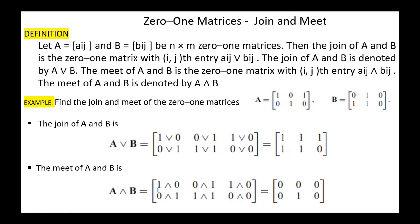The meet of matrices A and B is computed entry-wise using AND: 1 AND 0, 0 AND 1, 1 AND 0, 0 AND 1, 1 AND 1, 0 AND 0. The result is the matrix 0, 0, 0, 0, 1, 0.